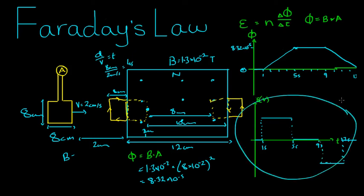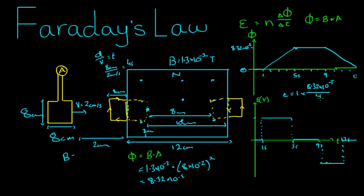The graph of the voltage is the gradient function of the graph of the flux multiplied by n. So let's figure out the voltage induced here. We know that the magnitude of the voltage is equal to n equals one times the change in flux, that would be between zero and 8.32 times 10 to the negative five, occurring over four seconds. So that's 8.32 times 10 to the negative five divided by four, which equals 2.08 times 10 to the negative five volts, a minuscule amount of voltage.